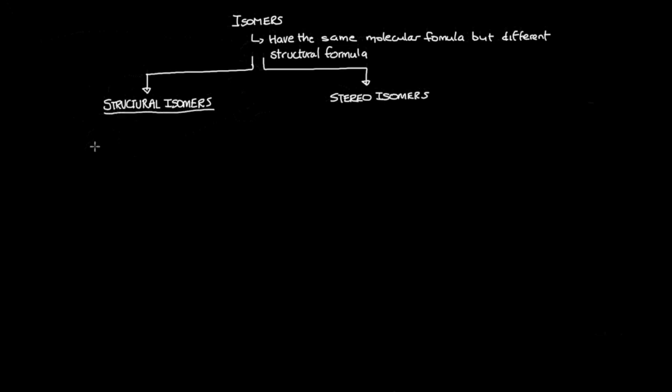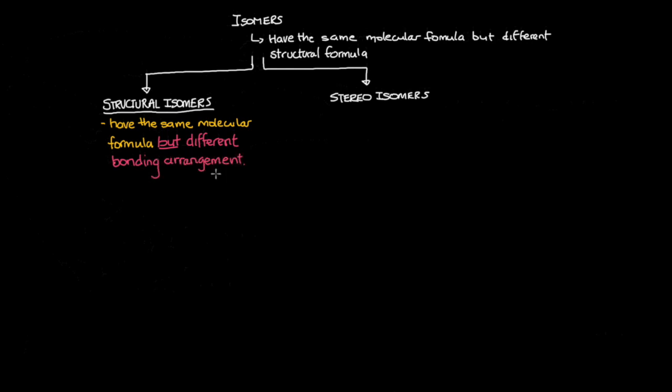Let's begin by focusing on structural isomers. This class of isomers have the same molecular formula but different bonding arrangement. Let's look at an example. Let's assume a class of students are given the following molecular formula for a compound, C2H6O, and they are asked to draw the structural formula for this compound.